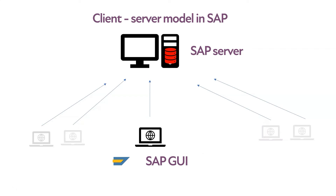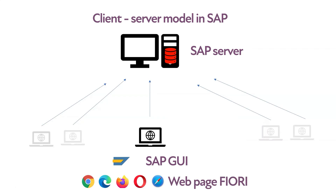You must know that in the latest version of SAP S/4HANA, we have the ability to log in to the system directly from a web browser. The name of this user interface is Fiori. However, in Fiori you only have access to a few functionalities via the website. SAP strives to be able to do everything in the system through a web browser, but today SAP GUI is still the main tool for connecting to SAP.